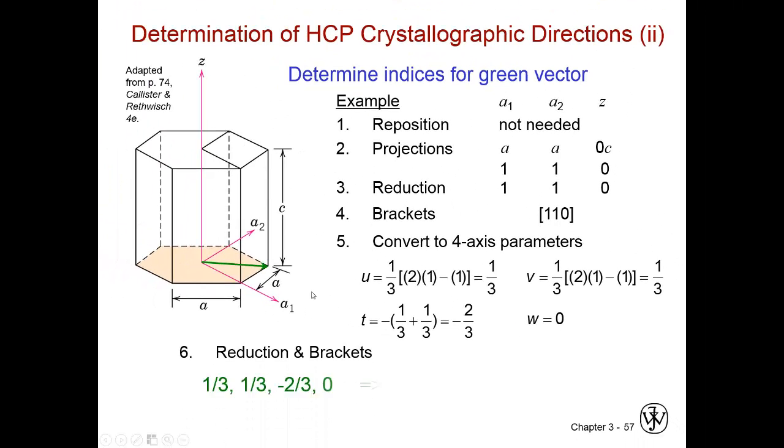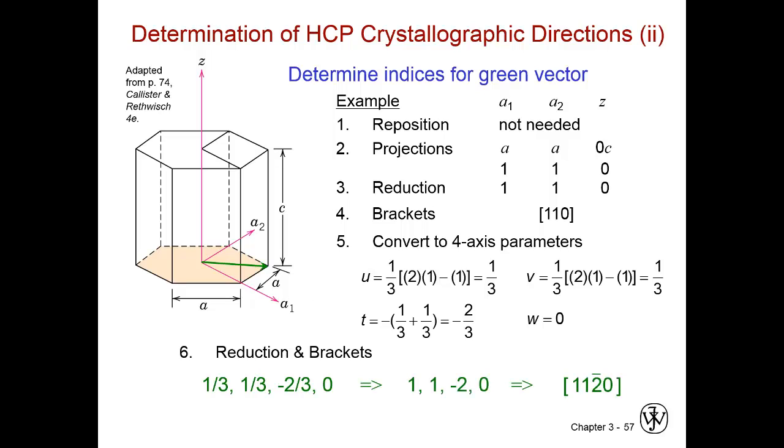So then, six. We find the common denominator. Three, multiply through by that. So one third times three is one. One here again. Negative two thirds times three is negative two. And zero times three is zero. And then we put them in our Miller-Bravais brackets.